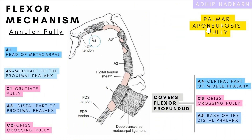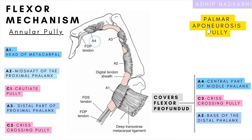The annular pulley is also called the vaginal ligament. There are five main annular pulleys: A1, A2, A3, A4, and A5. Recently, one more has been found — the palmar aponeurosis pulley. These are the main five annular pulleys, though they can vary a bit anatomically.